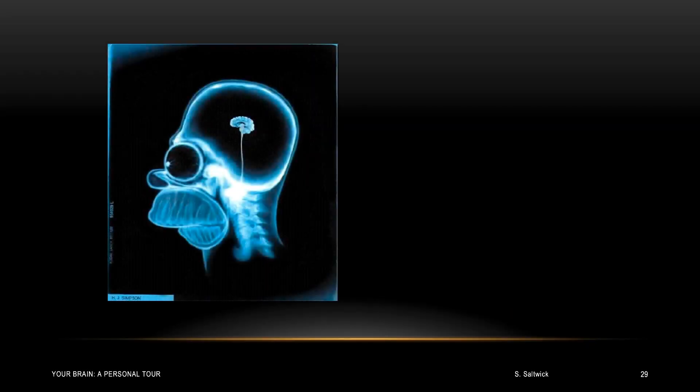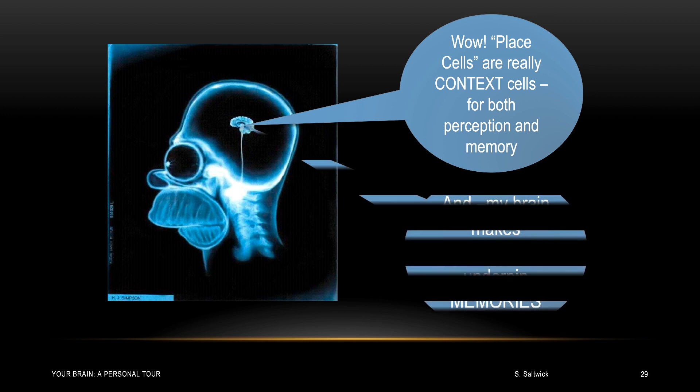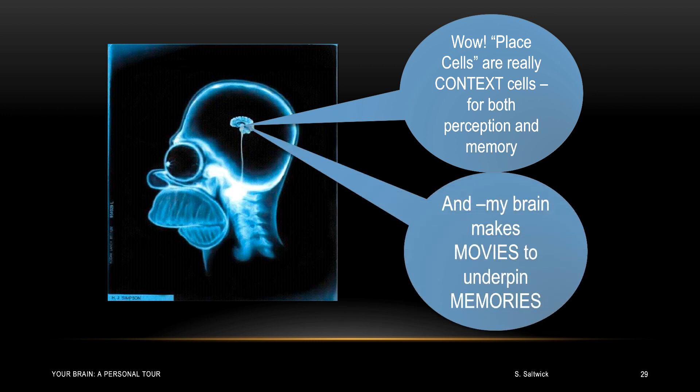Let's hear from Homer. The first thing Homer would like to say is, wow, place cells are really context cells, not only for perception of context, but also for the memory of context. Many of the same cells that perceive a context are the ones that are associated with the memory of the context. The second thing Homer says is his brain makes a movie about experiences to help in the formation of such a memory for the experience.